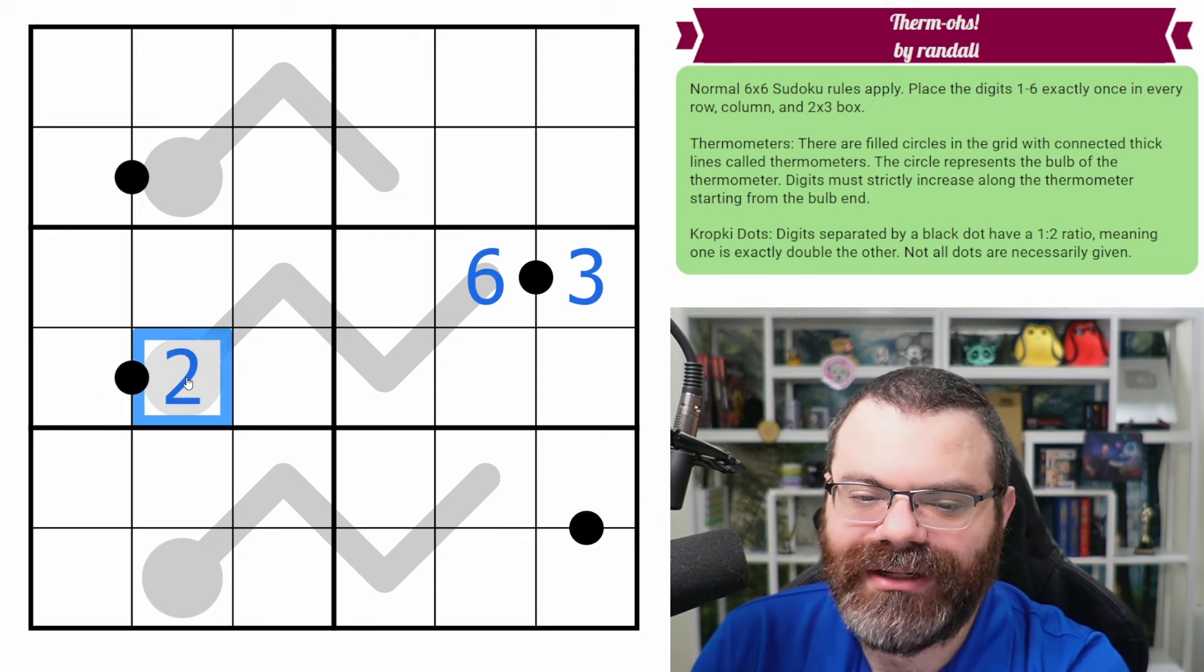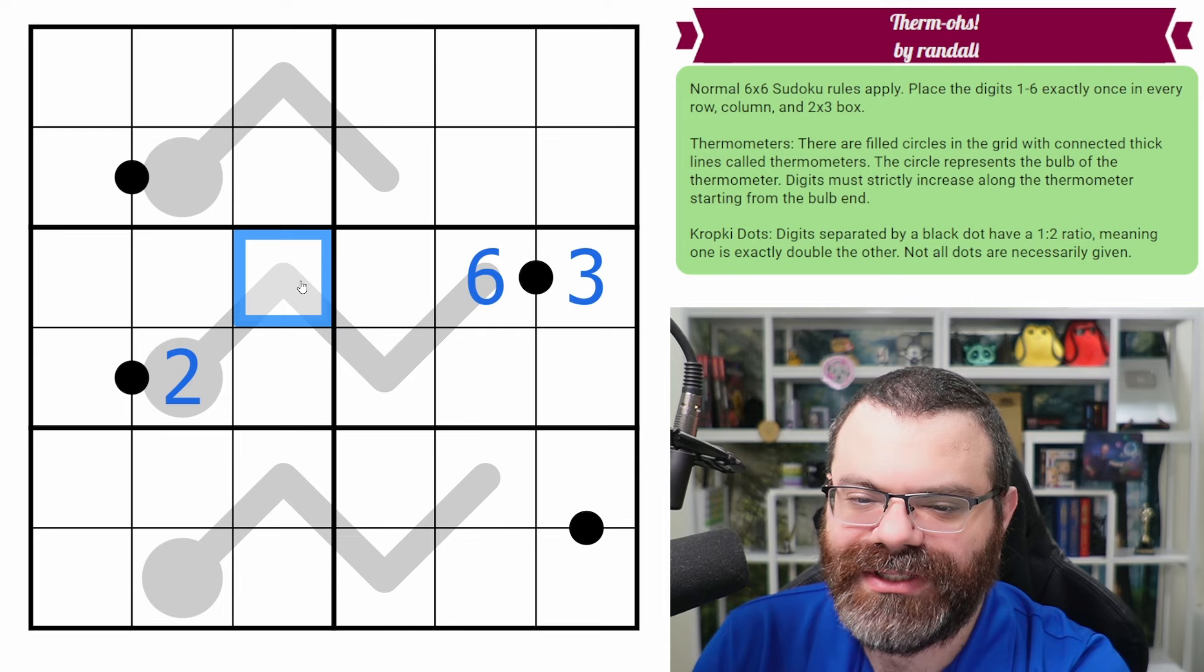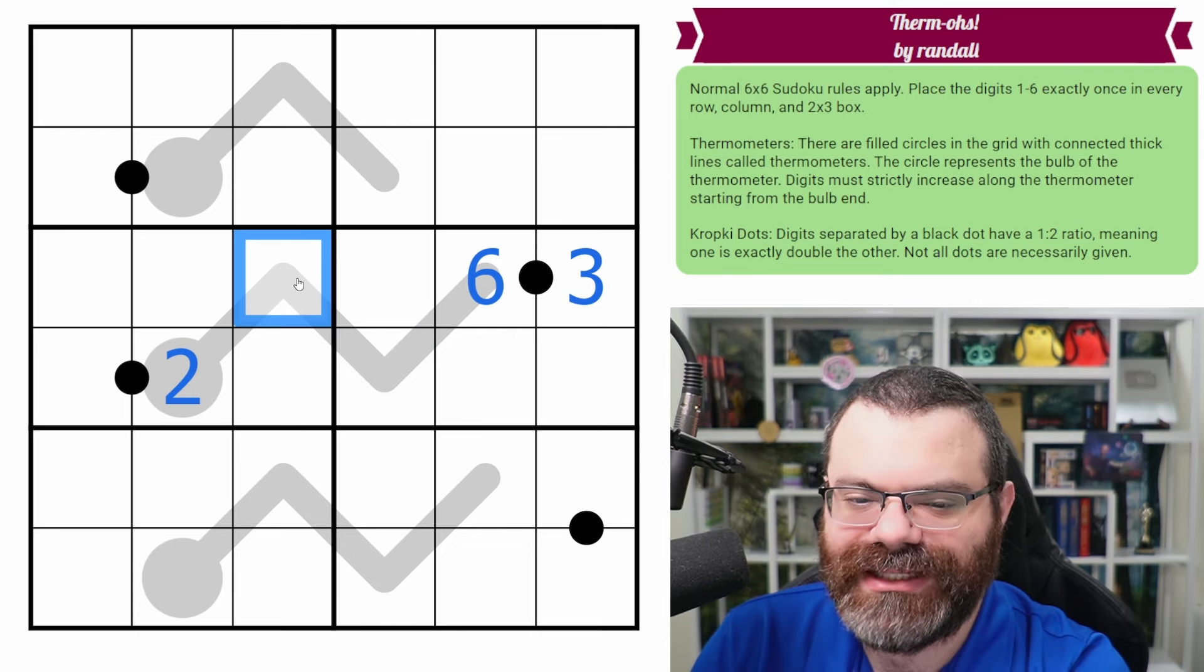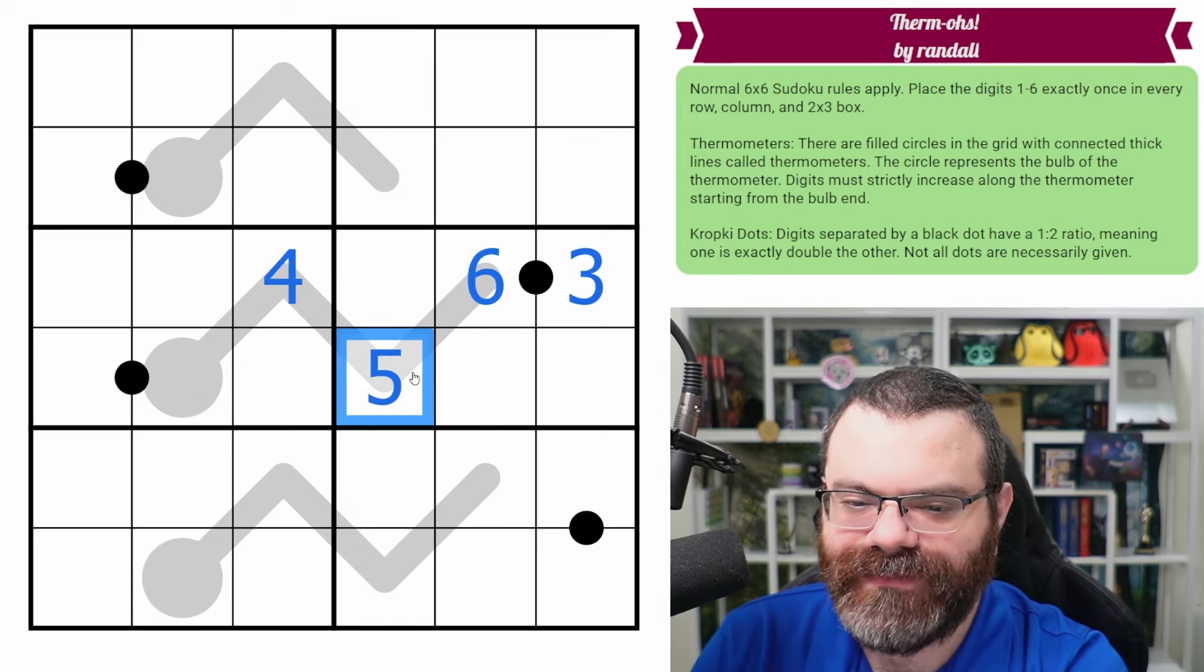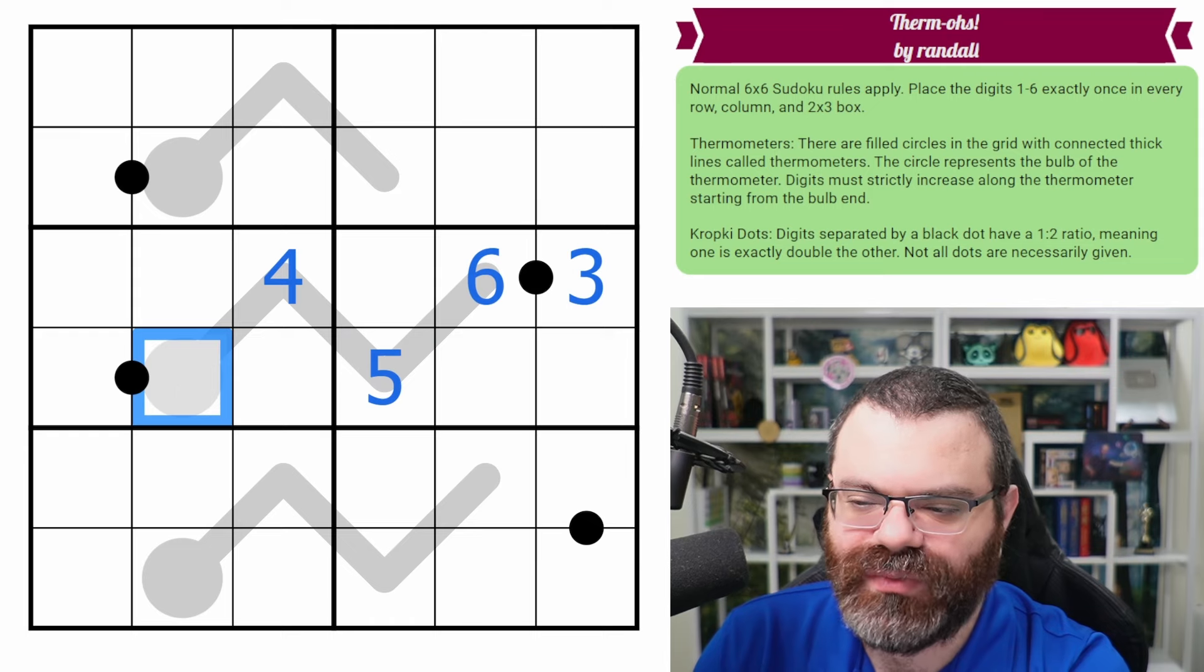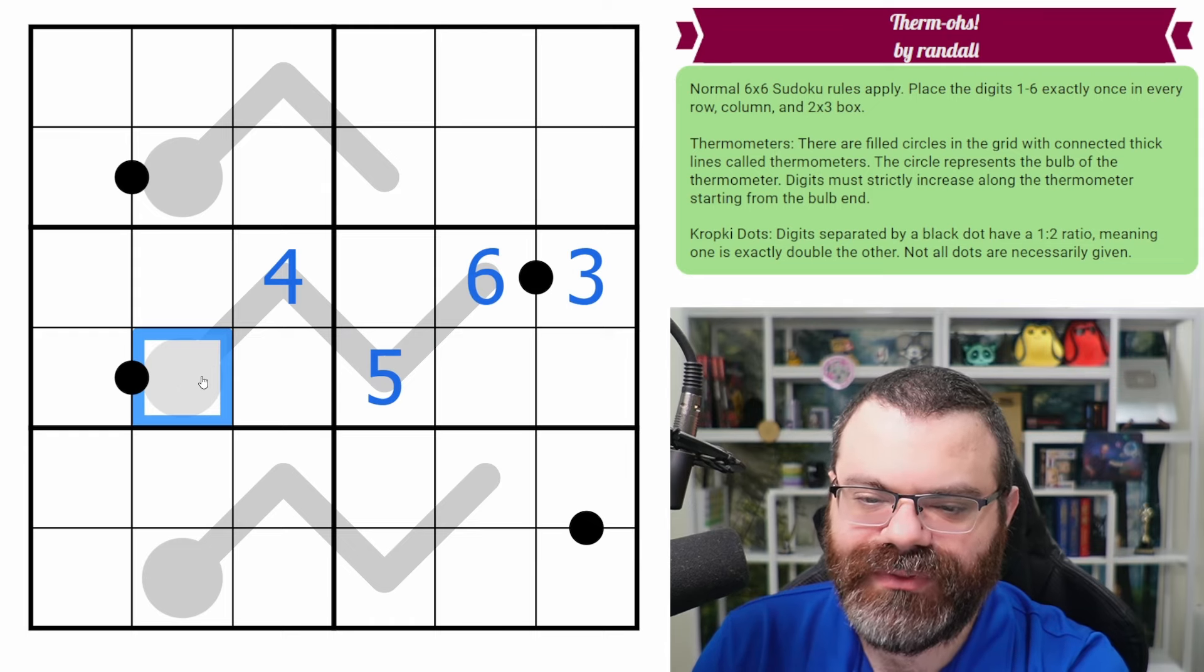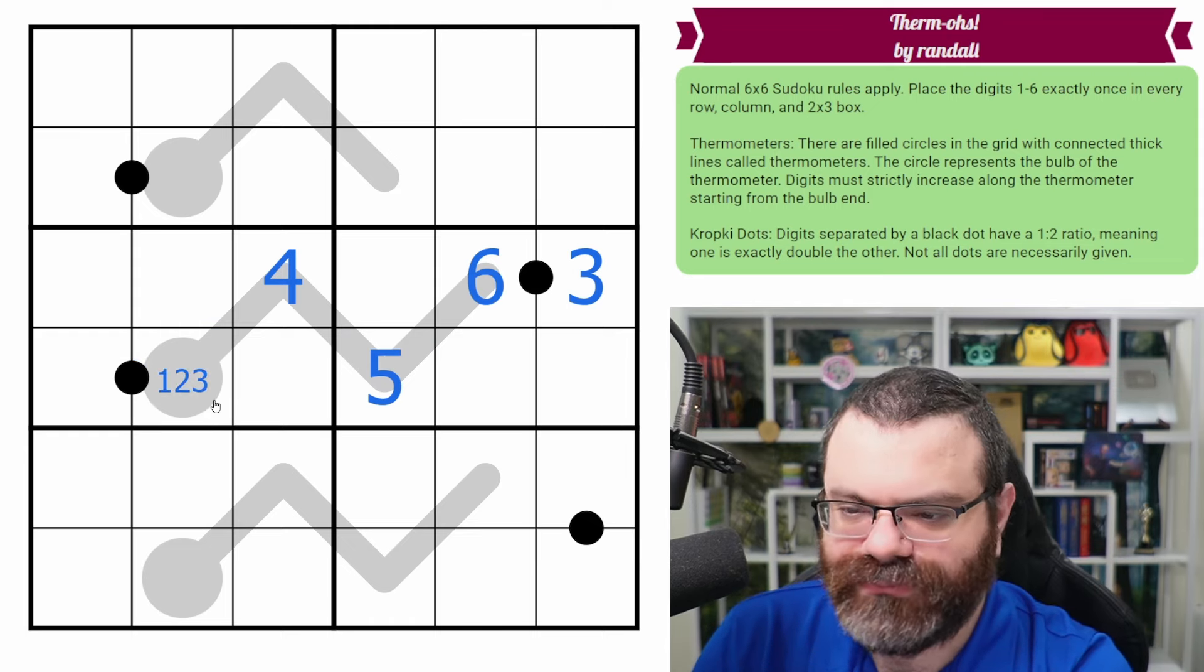If this ends up any higher than one, that doesn't help us. That doesn't help us add more digits as possibilities here. So this is four and five. And then this is one or two. I guess this is one, two, or three. We don't really know.